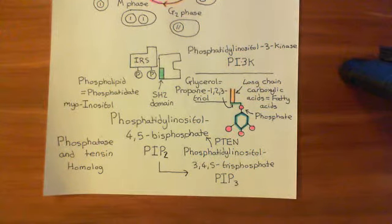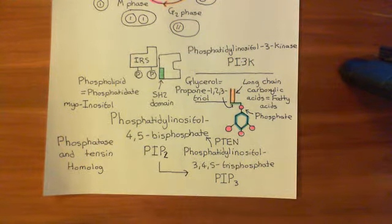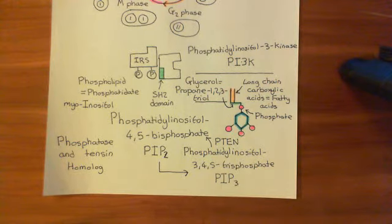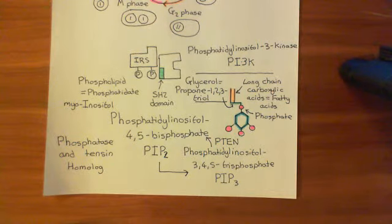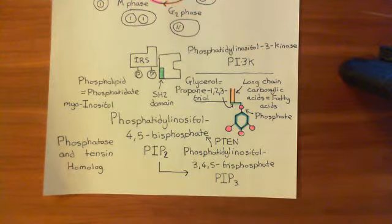Welcome to this next video in which we are discussing the insulin receptor. We've seen how when the insulin receptor is activated by the binding of insulin to the alpha subunits, the tyrosine kinase domains of the beta subunits on the cytoplasmic side of the membrane will phosphorylate the tyrosine residues of the opposite beta subunit.